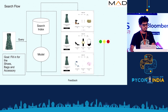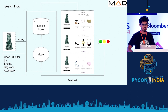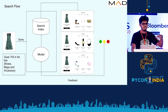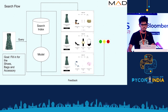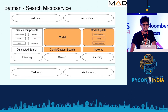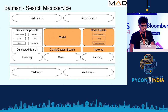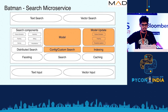We also have an online feedback system which constantly changes the model based on feedback from the users, and that will change the results in real time. We call this search microservice Batman, and it is in production. These are the components of Batman, which are pretty comprehensive.